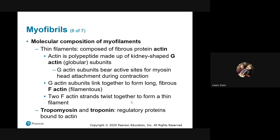Tropomyosin and troponin are called regulatory proteins. Tropomyosin threads around the actin thin filaments and covers the myosin binding sites, blocking cross-bridge formation. Troponin acts like a push pin or thumbtack that holds the tropomyosin in place over those binding sites, keeping the muscle in a relaxed state until signaled.